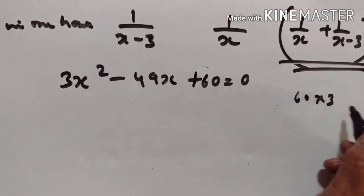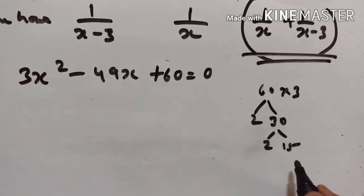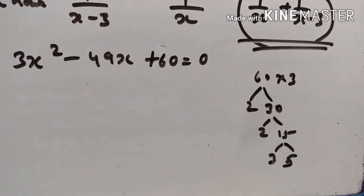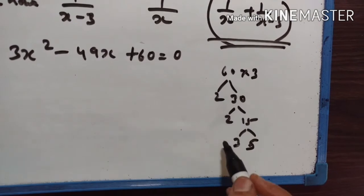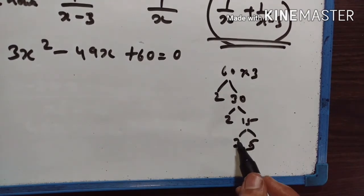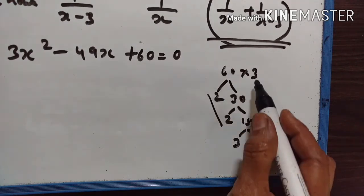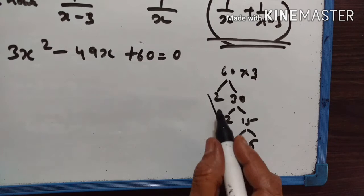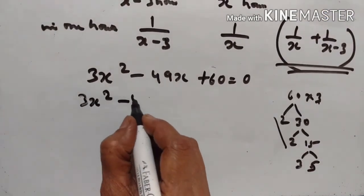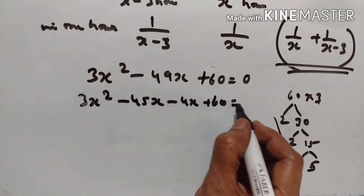To factor three x squared minus 49x plus 60 equals zero, we need factors of 3 times 60 equals 180 that add to minus 49. That gives minus 45 and minus 4. So: three x squared minus 45x minus 4x plus 60 equals zero.